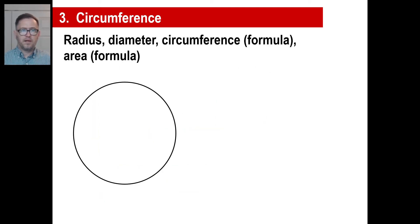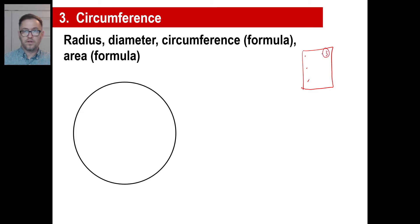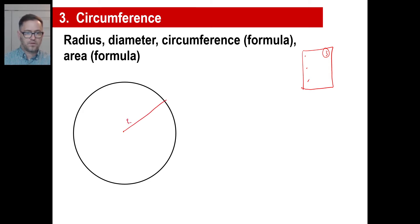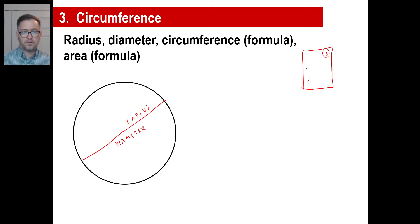Let's look at circles. You need to know a couple of things about circles — if you need to pause and write these down, go ahead. A radius is a line that goes from the center of the circle to the edge of the circle. A diameter is a line that goes through the center of the circle and hits both edges. The circumference — in Latin, 'circum' means around — so circumference means the distance around a circle.